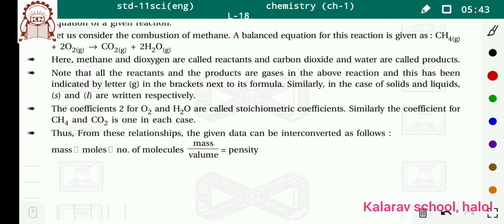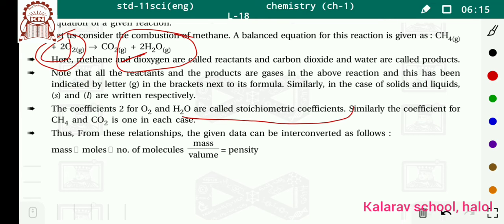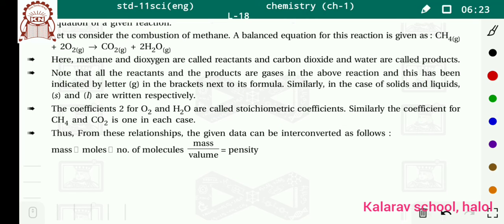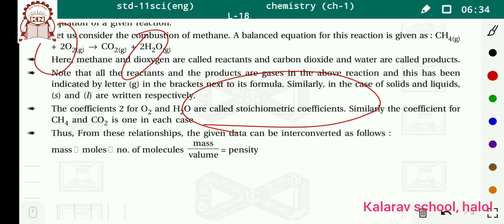This has been indicated by the letter G in brackets next to its formula. In case of solid and liquid, S and L are written respectively. The coefficient 2 for O2 — oxygen kitnay hain, two — aur H2O mein bhi coefficient kitnay hai, two. Toh the coefficient 2 for oxygen and H2O are called stoichiometric coefficients. Hum log yeh two ka use isliye kar rahe hain kyunki hamaara equation balance kar rahe hain — iski wajah se inhe stoichiometric coefficients bolte hain.